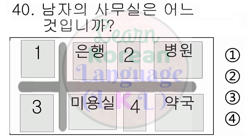다음은 34번부터 35번까지 문제입니다. 다음을 듣고 이어지는 말을 고르십시오. 보기 문제. 정답은 1번입니다. 34번. 안녕하세요. 처음 뵙겠습니다. 1번. 오래간만입니다. 2번. 작년에 왔습니다. 3번. 만나서 반갑습니다. 4번. 네, 안녕히 가세요. 다시 들으십시오. 안녕하세요. 처음 뵙겠습니다.